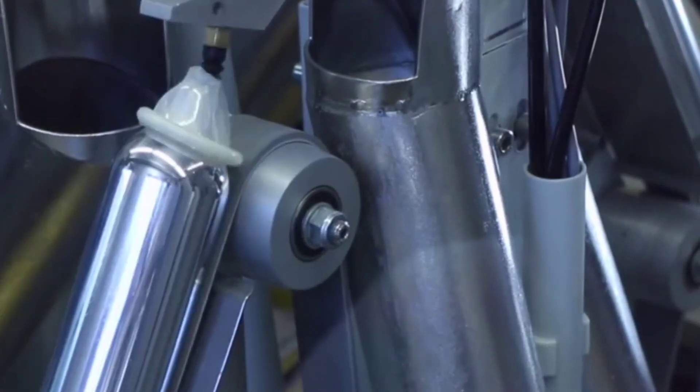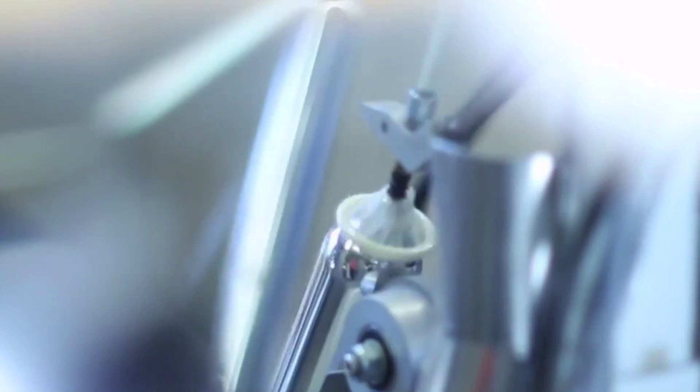Finally, the condoms are removed from the formers. The condoms automatically roll off the formers. A machine shapes and trims the ring of latex at the base of each condom.